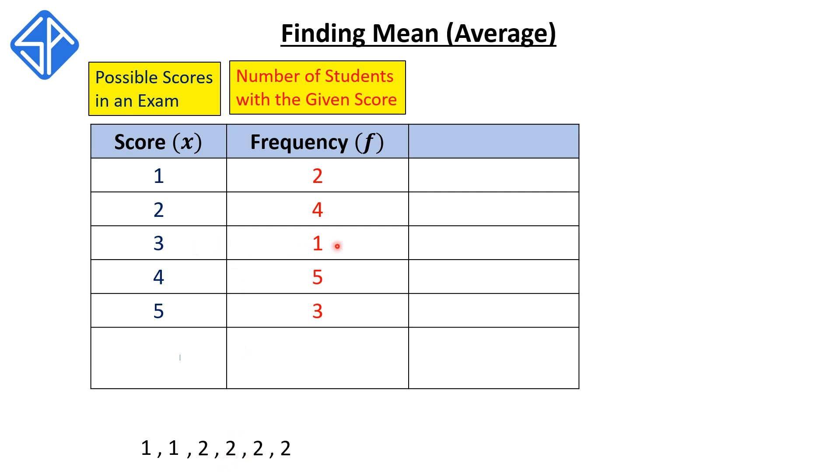The score of 3 corresponds to a frequency of 1. So only 1 student in the class got a score of 3. Next, 5 students got a score of 4, and then 3 students got a score of 5.